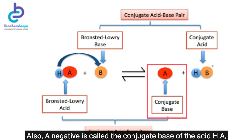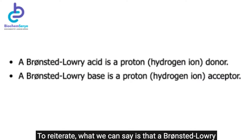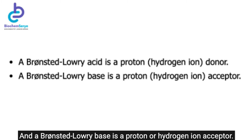A-negative is called the conjugate base of the acid HA, and HB-positive is called the conjugate acid of the base B. To reiterate, a Bronsted-Lowry acid is a proton or hydrogen ion donor, and a Bronsted-Lowry base is a proton or hydrogen ion acceptor.